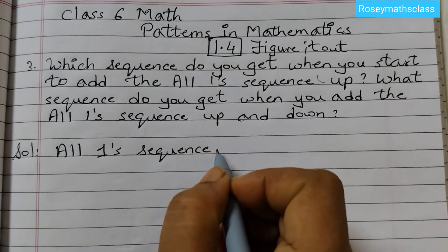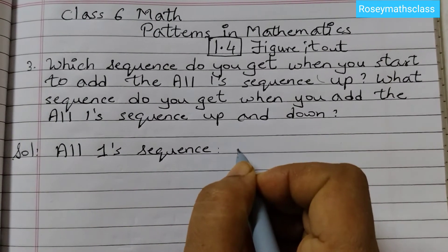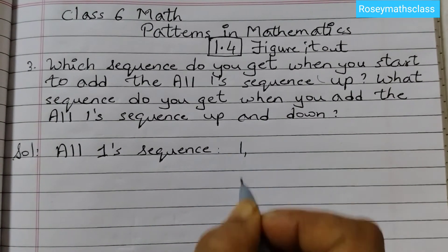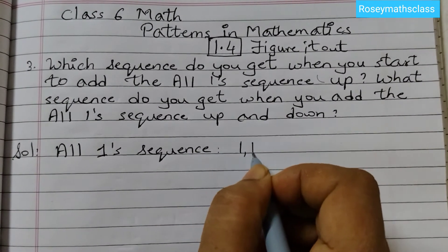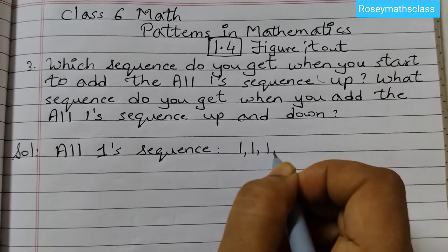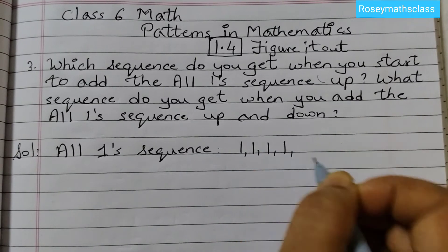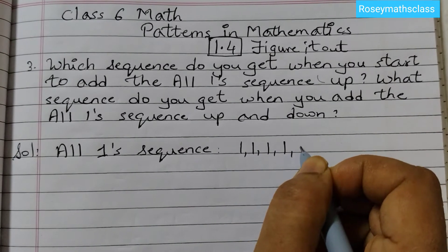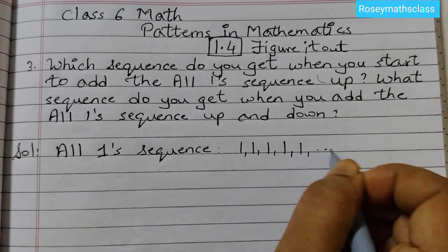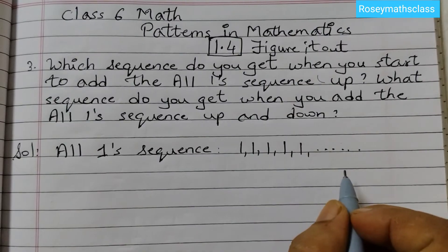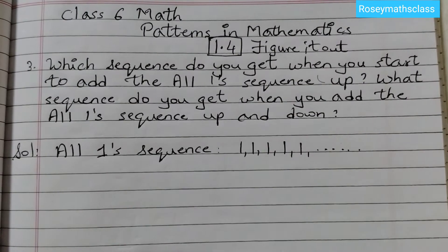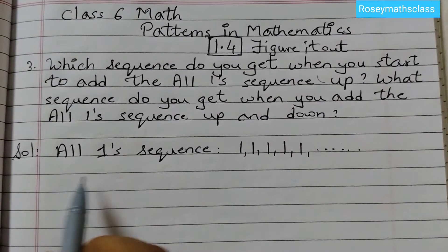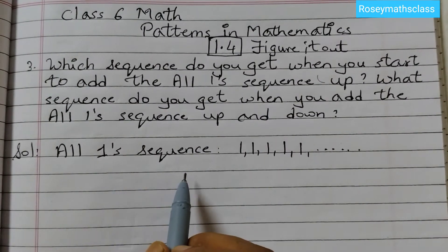The all ones sequence means all the numbers are 1. So 1, 1, 1, 1 — it goes on like that. You just have 1 in this sequence. That's what we call the all ones sequence.